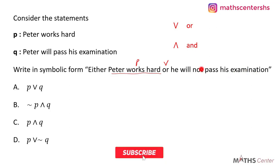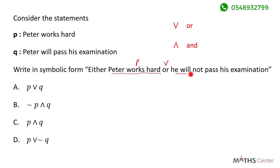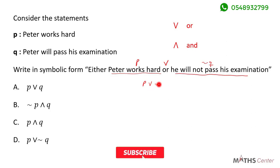The second part is: he will not pass his examination. Statement K is Peter will pass his examination, so he will not pass his examination is the negative of K. So in symbolic form, either Peter works hard or he will not pass his examination is written as P OR the negative of K. When we look through the options, we can see that the correct option is D: P OR the negative of K.